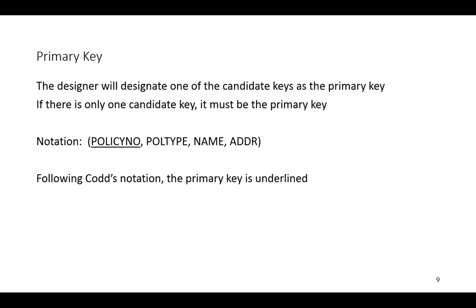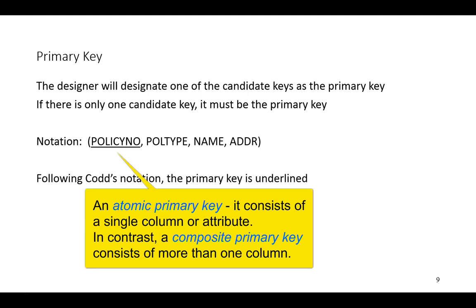Note that there's nothing special about this notation — it's just a simple way to enumerate the columns of a table and to identify the column or columns that serve as the primary key. In this particular situation, policy number is what we'll call an atomic primary key. It consists of just one column.